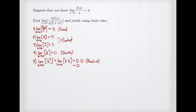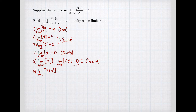Once we have the limit of x², we can construct 2+x² using the limit of a sum. We know the limit of 2 is 2 and the limit of x² is 0, so the limit of 2+x² as x goes to 0 is 2+0 = 2. That is the limit of a sum.